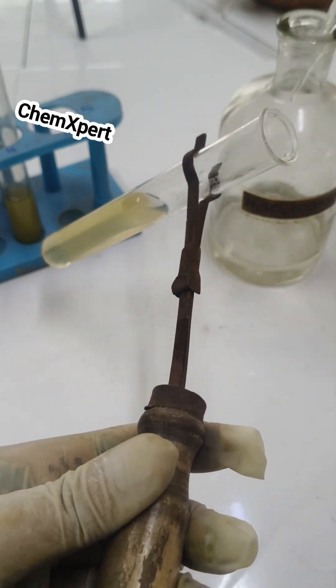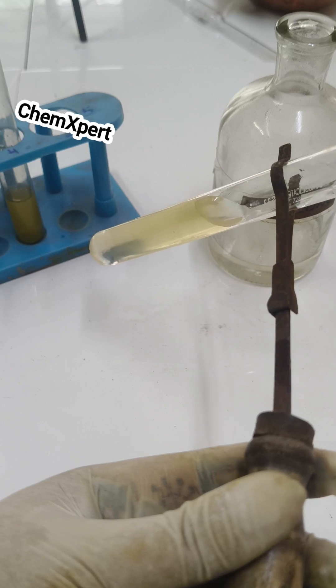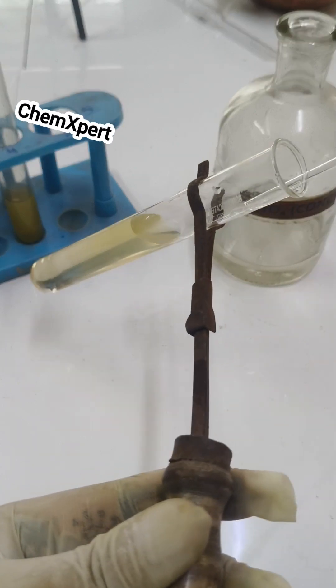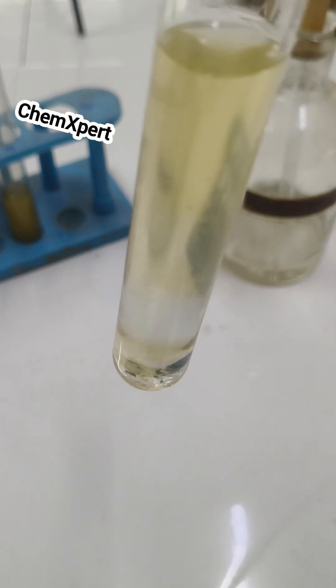Place the test tube at the angle of 45 degrees and at the side of the test tube add concentrated H2SO4 into it. You can observe a ring is formed at the junction of two liquids.